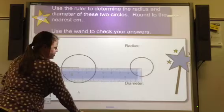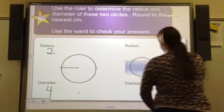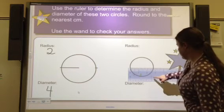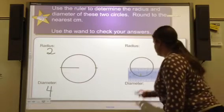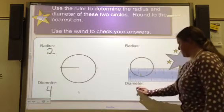On our second figure, drag my ruler over here, and I see that my diameter is 2.8. And I'm going to round to the nearest centimeter, making it 3. It's almost there anyway.